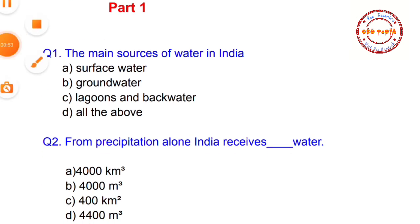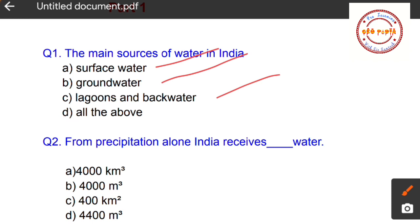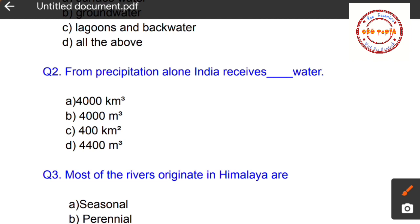Question number one: What are the main sources of water in India? Four options are given — A: surface water, B: groundwater, C: lagoons and backwater, and D: all of the above. The main sources of water in India include all three, so the correct option is D: all of the above.